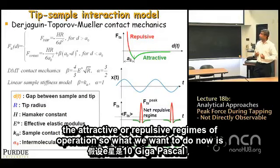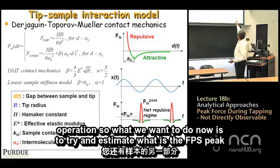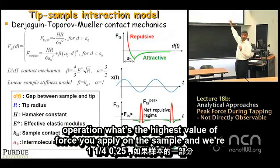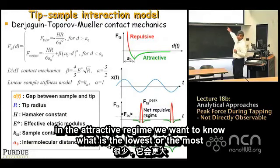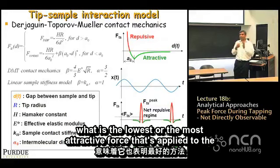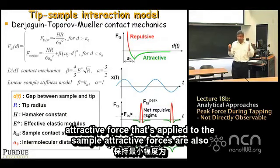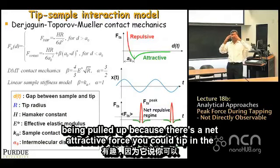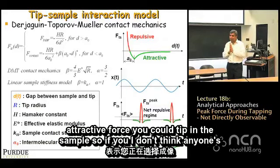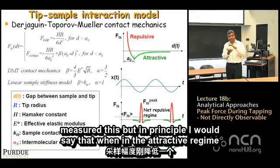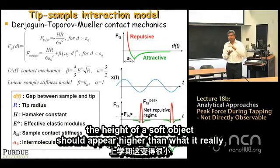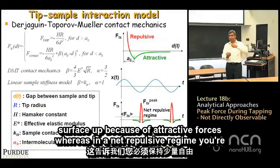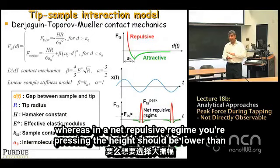We want to estimate F_TS peak in the repulsive regime — the highest value of force applied on the sample — and in the attractive regime, the most attractive force applied. Attractive forces are important because if there's a net attractive force, the surface of the object is actually being pulled up. In the attractive regime, the height of a soft object should appear higher than it really is, whereas in a net repulsive regime the height should appear lower.